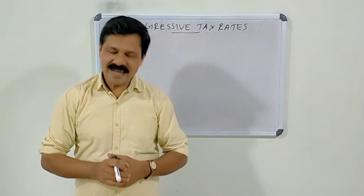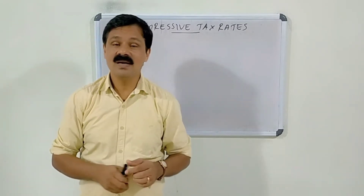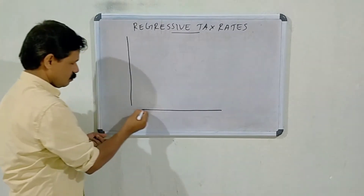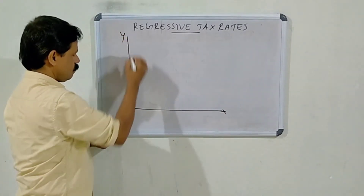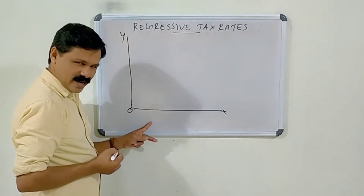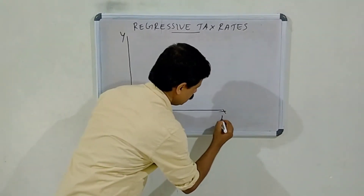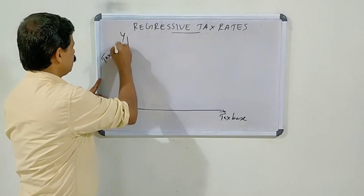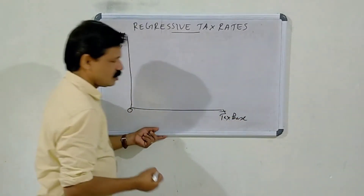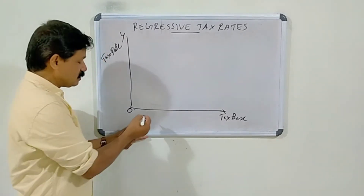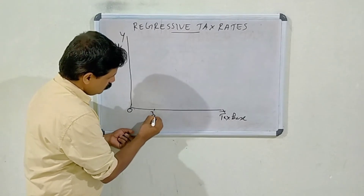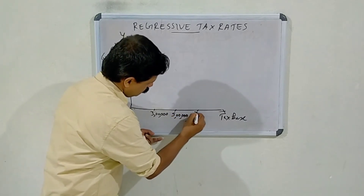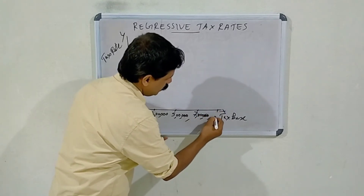The regressive tax rates can be easily explained with the help of a diagram. In this diagram, the x-axis represents tax base, that is income, and the y-axis represents the tax rate. We have to measure income or tax base along the x-axis — 3 lakhs, 5 lakhs, 7 lakhs, and finally 9 lakhs rupees.